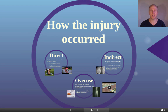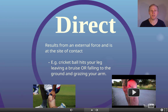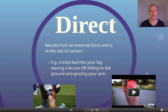How the injury occurred can be direct, indirect, or overuse. A direct injury results from an external force and is always at the site of contact. So if a cricket ball hits you in the leg and gives you a bruise, or if you fall off your skateboard and graze your arm, that's a direct injury because it's happening at the site of an external force.